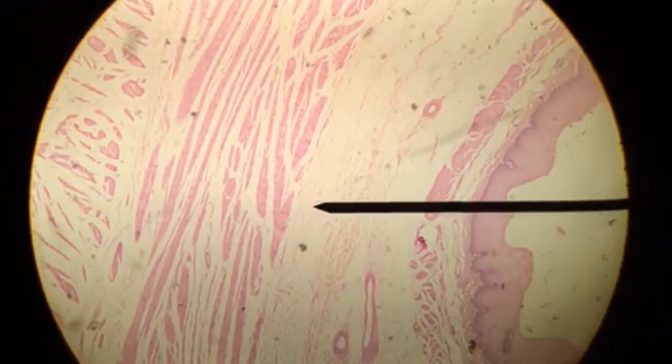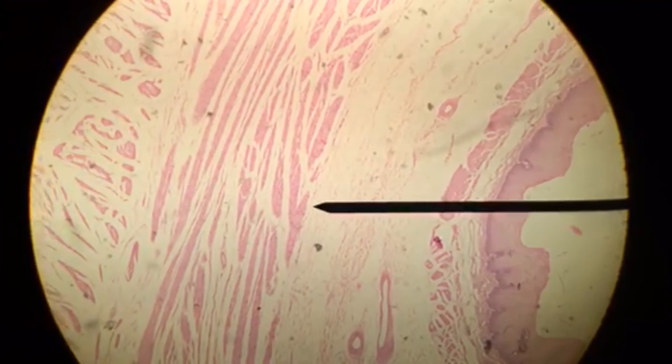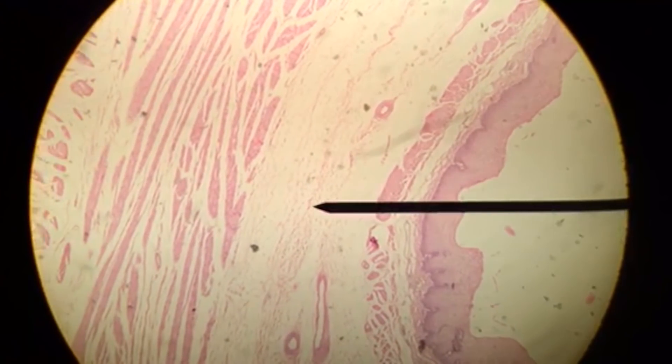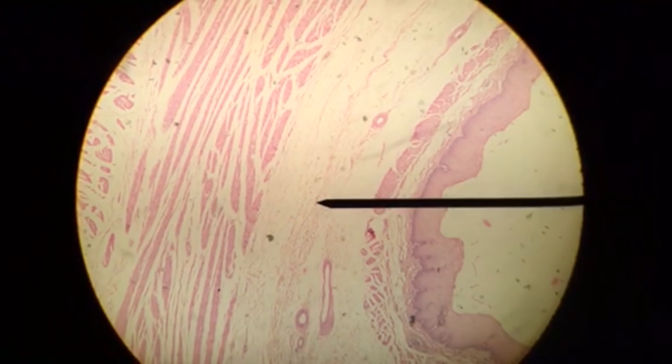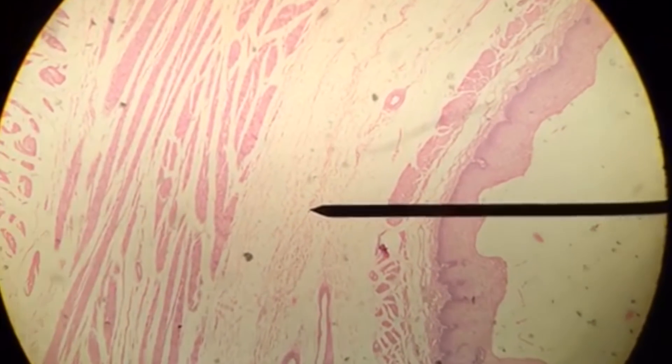The underlying layer is the submucosa. It is comprised of connective tissue, and it's going to be rich in blood vessels and lymphatic. We're also going to see our submucosal plexus here, so our neural innervation coming in through this layer.